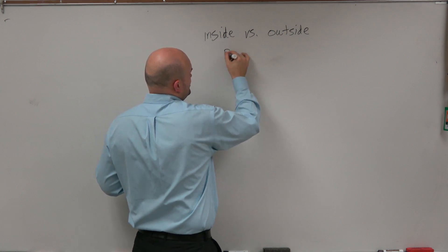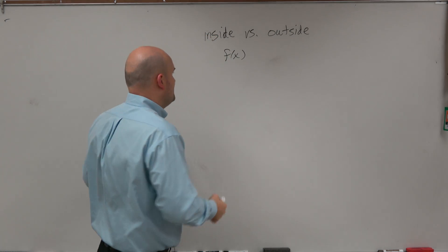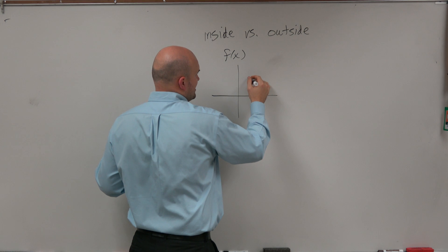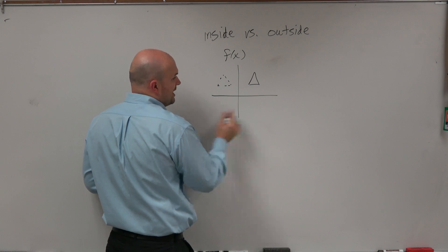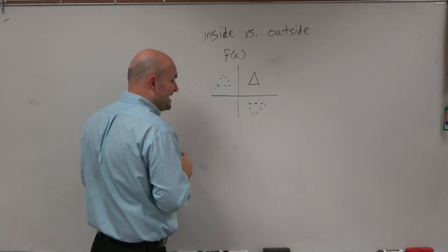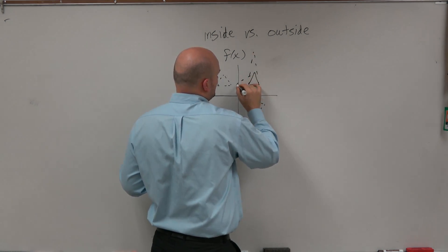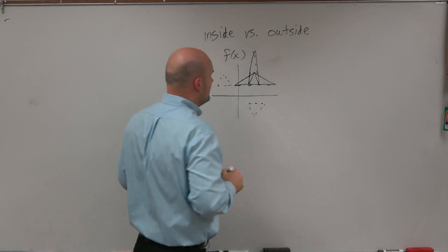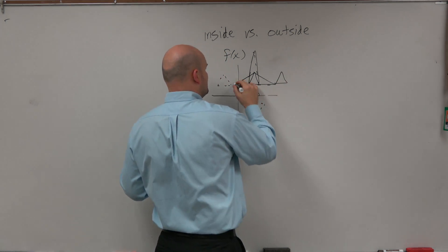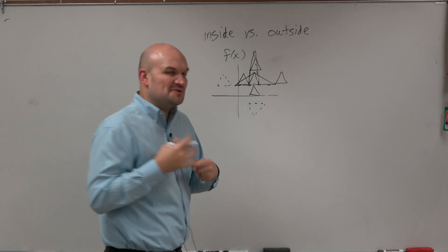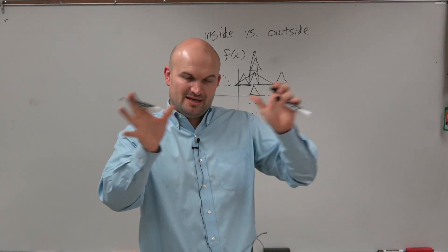So when we're looking at a function — let's just say f of x — there are a lot of different things we can do to transform it. If you remember from your geometry days, let's say we have a triangle. We could reflect that triangle over the y-axis, reflect it over the x-axis, stretch it vertically, stretch it horizontally, and we could also shift that triangle to the right, down, to the left, and up.